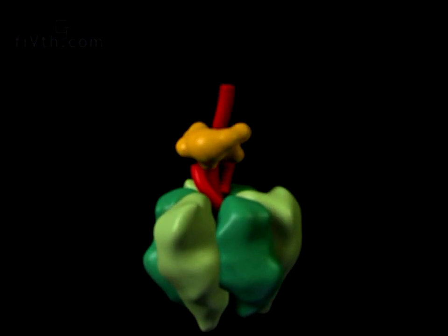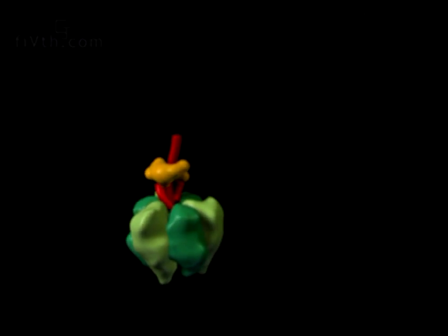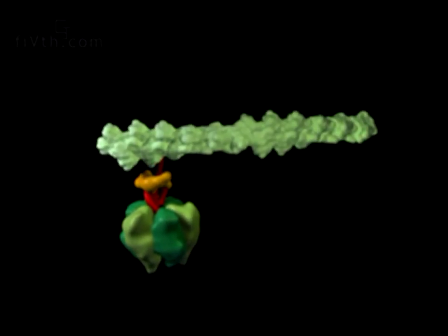To show the rotation of the central shaft, a short fluorescent actin filament was experimentally attached to it. Single filaments attached to single F1 ATPases can be visualized in the microscope.